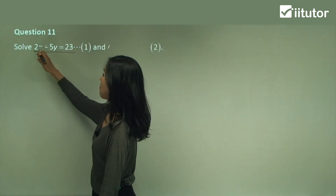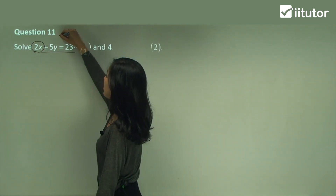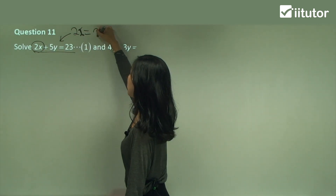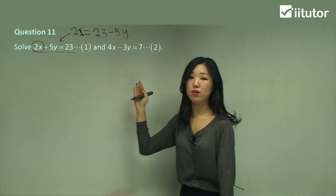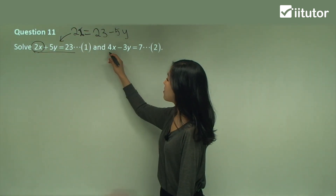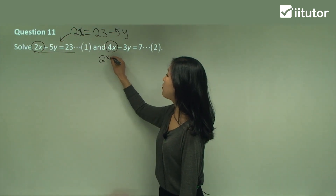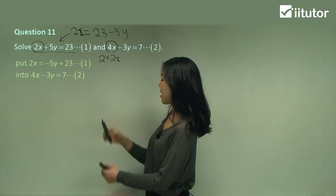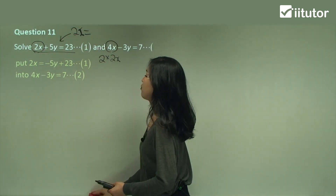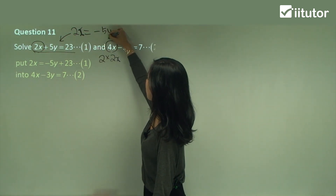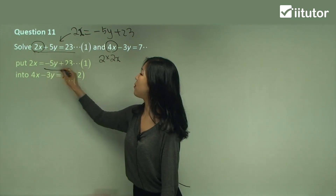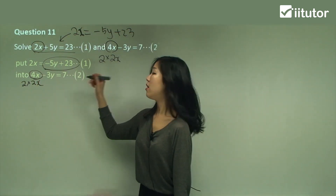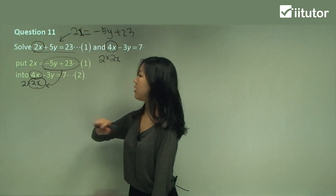Now look at the second equation — 4x is 2 times 2x. So I know that 2x equals negative 5y plus 23, and I can substitute that into the 2x position in the second equation: 2 times (negative 5y plus 23) minus 3y equals 7. Expand with the 2: negative 10y plus 46 minus 3y equals 7. Gather like terms — move 46 over making it negative 46. Negative 10y minus 3y is negative 13y, and 7 minus 46 is negative 39. Divide both sides by negative 13 to get y equals 3.